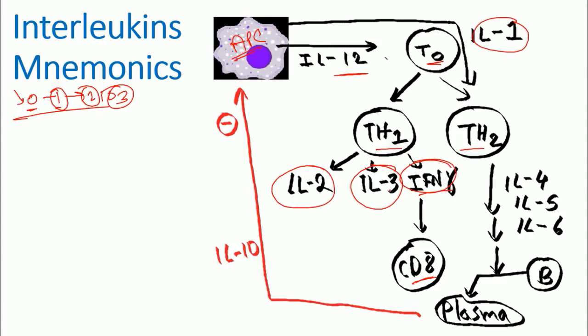Now if you go with the T helper 2 cells, T helper 2 on the other hand will secrete interleukin-4, 5, and 6, which will ultimately signal B cells to mature into plasma cells, which will turn into antibody-secreting factories. T helper 1, once formed from naive T cell, will produce IL-2 and IL-3 and interferon gamma. And T helper 2 is going to release interleukin-4, 5, and 6. So we're going from 0, 1, 2, 3, 4, 5, 6. And this 4, 5, 6 are responsible to convert B cells into plasma cells.